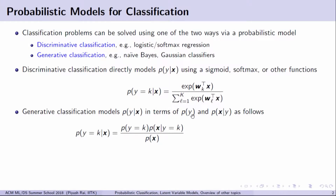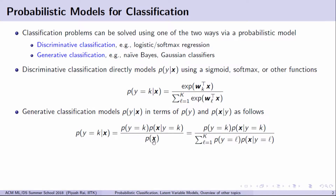In discriminative classification, the parameters we're learning are the weight vectors, whereas in generative classification we are learning the distributions P(y) and P(x|y). Once we can learn these distributions, we plug them into the Bayes' rule equation to compute the probability of the label being k given the input. To apply the generative classification rule, we need an estimate of P(y=k) and an estimate of P(x|y=k). If we can estimate these distributions, we have solved the generative classification problem.